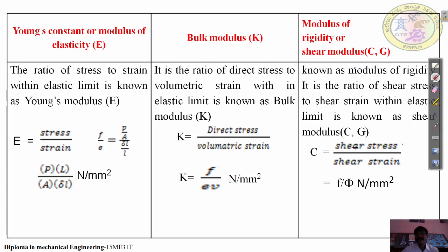For modulus of rigidity, it is shear stress by shear strain within elastic limit — that is tau by phi — and it is denoted in Newton per mm square.